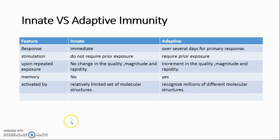The innate immune response is activated by recognition of a relatively limited set of molecular structures. By contrast, the adaptive immune system potentially can recognize millions of different molecular structures of microbes, and can also recognize non-microbial environmental antigens as well as self-antigens that are normally present in healthy tissues.